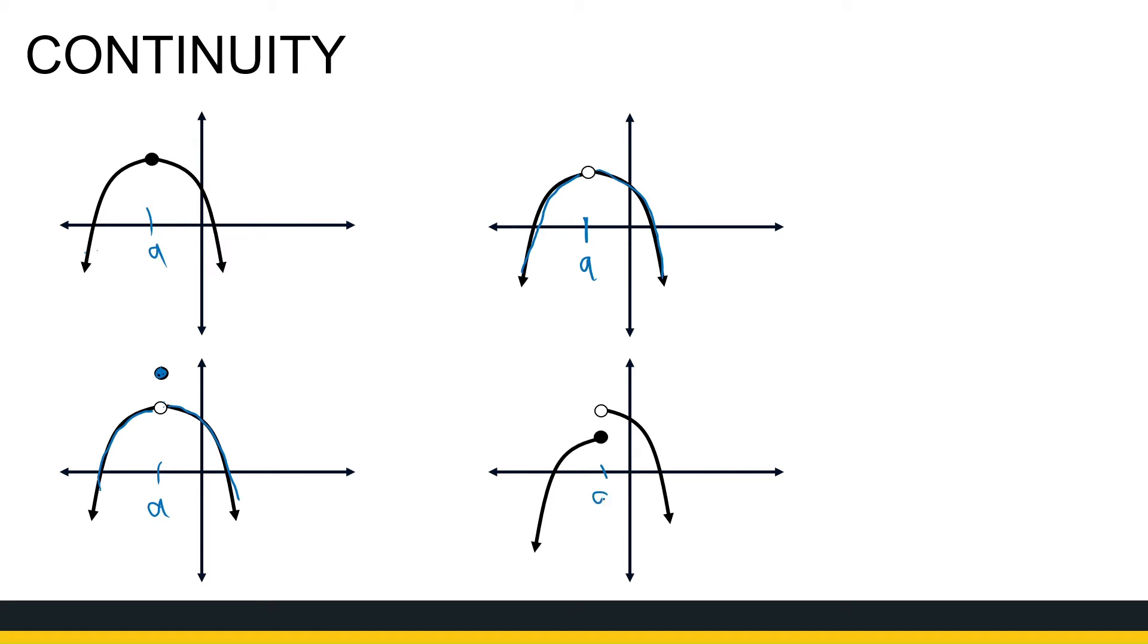The last one, at a there's a jump in my graph. I go up to there, I jump up and I go down. Also not continuous. So a function is continuous intuitively if you can sketch it without lifting up your hand.